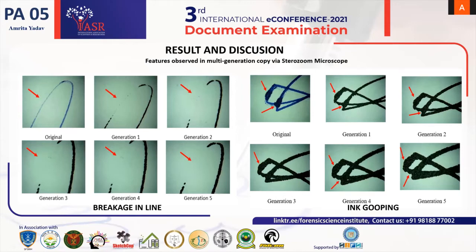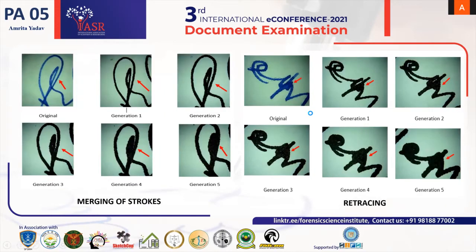The next feature was in-grouping, which is basically the accumulation of an excessive amount of ink at a single point. In generations one and two, in-grouping can be found in the printed document as a small dot pattern. In further generations, the size of the dot gets enhanced, giving it a cluster-like formation, and it can even be mistaken as a pen pause or remain unidentified.